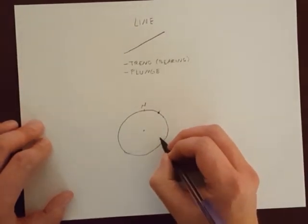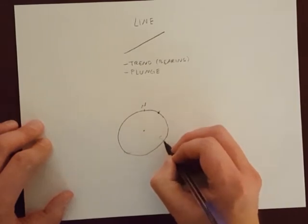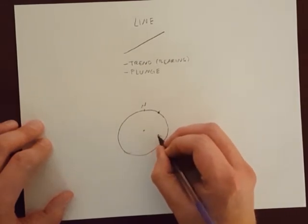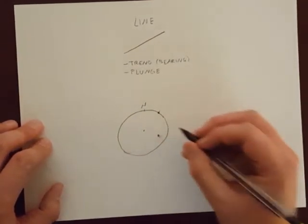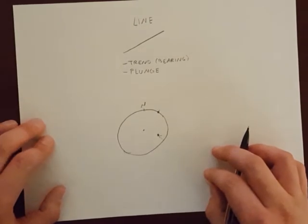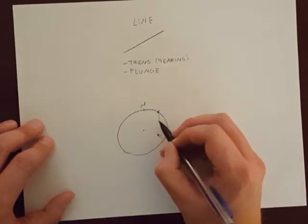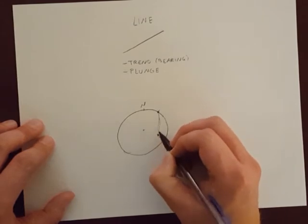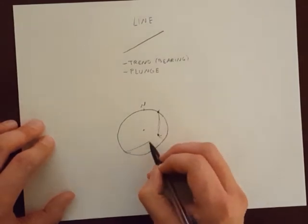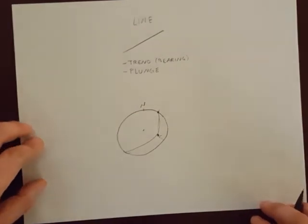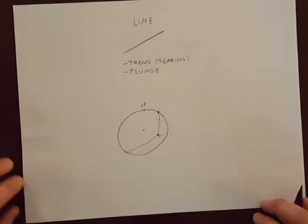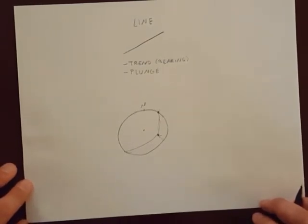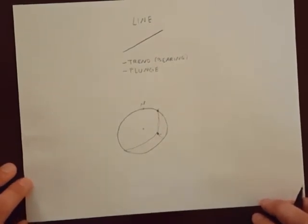When I plotted dip, I counted in from the dip direction some angle to plot the dip amount. So dip and dip direction is also plotting a line while making a plane. The plane is a great circle that contains both of those lines. This should make sense. Two points make a line, and also two lines make a plane. We'll take advantage of that relationship later.